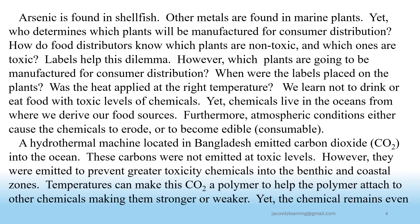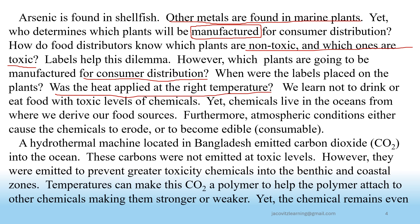Arsenic is found in shellfish. Other metals are found in marine plants. Yet who determines which plants will be manufactured for consumer distribution? How do food distributors know which plants are non-toxic and which ones are toxic? Labels help this dilemma. However, which plants are going to be manufactured for consumer distribution? When were the labels placed on the plants? Was the heat applied at the right temperature? We learned not to drink or eat food with toxic levels of chemicals. Yet chemicals live in the oceans from where we derive our food sources. Furthermore, atmospheric conditions either cause the chemicals to erode or to become edible.